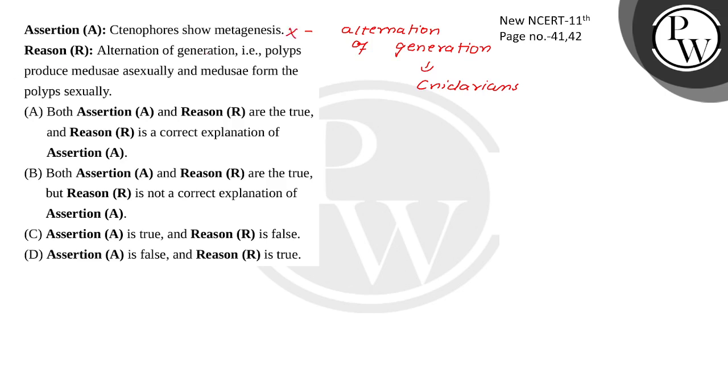The reason is alternation of generation. Polyps produce medusae asexually, medusae produce polyps sexually. This statement is correct. What are we seeing in alternation of generation?